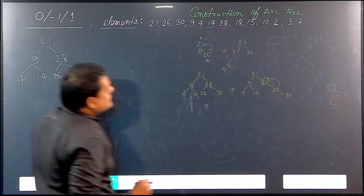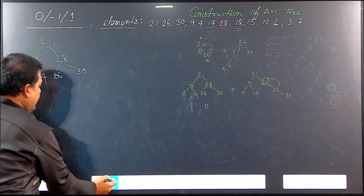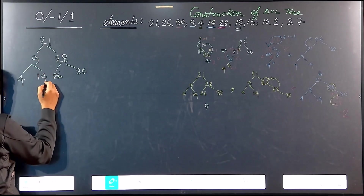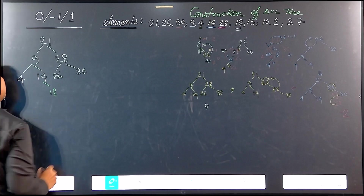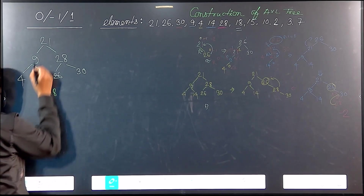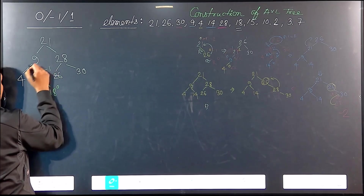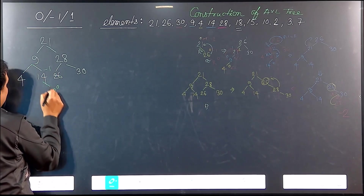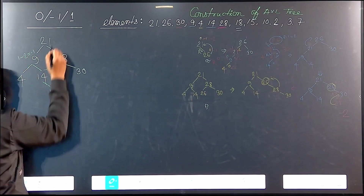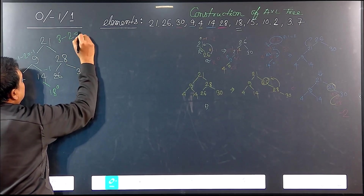Now 26 is here. The next element to insert is 18. So 18 will be inserted — it is less than 26, greater than 21, and greater than 14. The balance factors are: 0, minus 1, then 1, then going up 2 minus 1 is minus 1, then 1, 2, 3 minus 1 is 2. Then 3 minus 1 equals 2. No problem at this point.